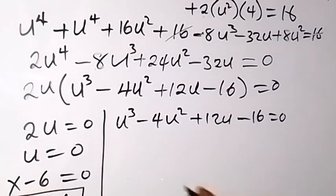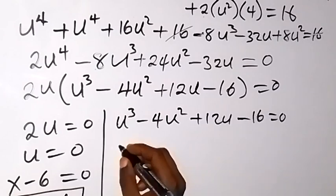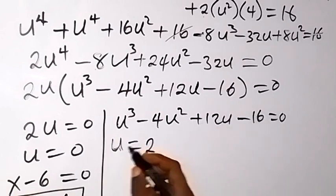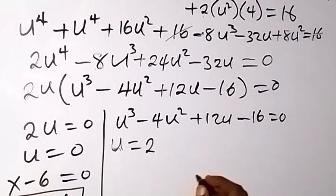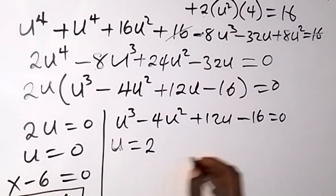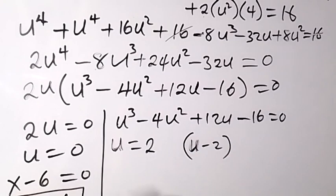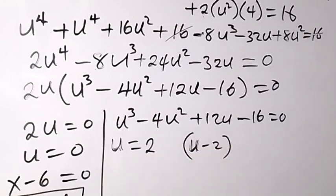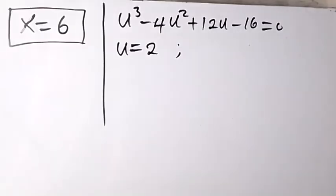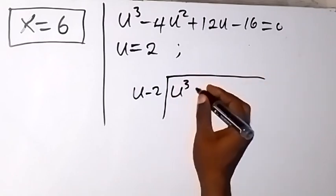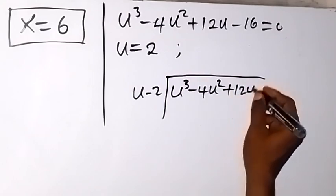For the cubic equation, we find a factor first. When we substitute u equals 2, everything equals 0, so u equals 2 is a root. That means (u minus 2) is a factor. So we use (u minus 2) to divide the polynomial: u cubed minus 4u squared plus 12u minus 16.